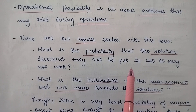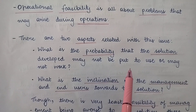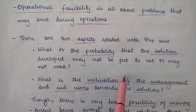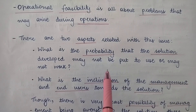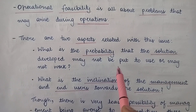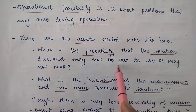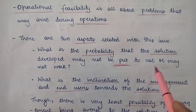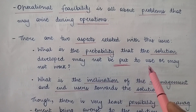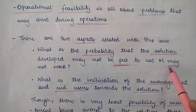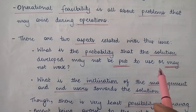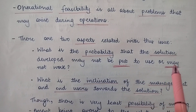So there are two conditions here. One, the project is developed but then it is not put to use — it is not used as it was expected. And second is that it is used but then it is not working. So what is the probability of these two things: first, the project not being used, and second, if it is used, then it is not working?